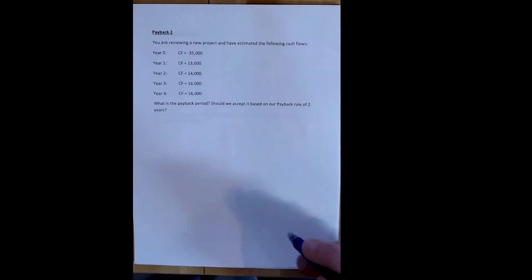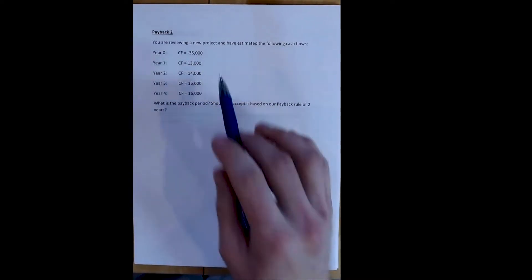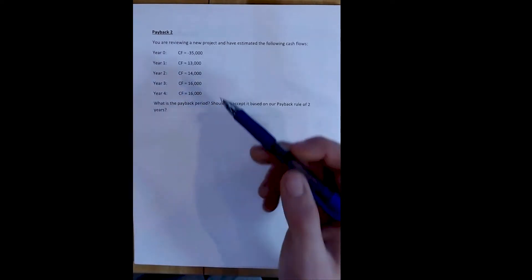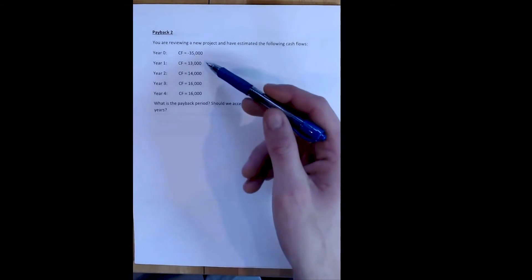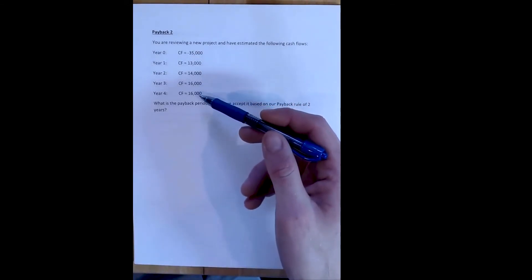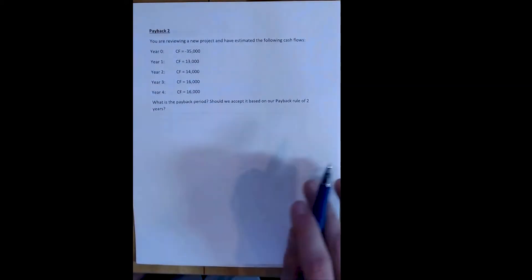Let's work one more payback problem with a new project. Here we have a different project. It has an initial cost of $35,000. Then it has four positive cash flows: $13,000, $14,000, and then $16,000 in year three and $16,000 in year four.